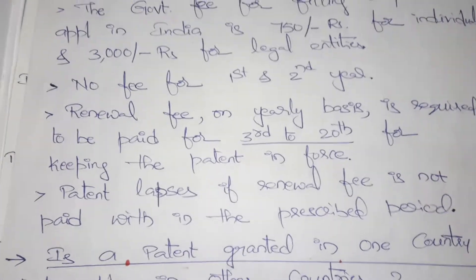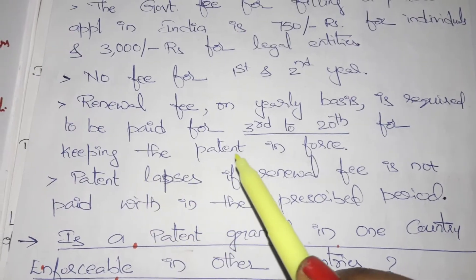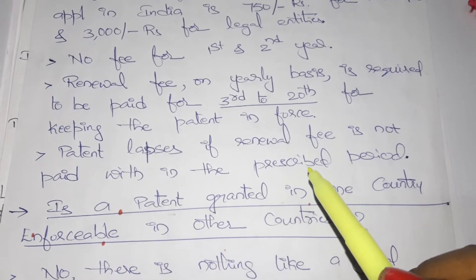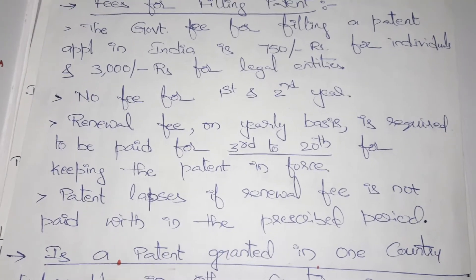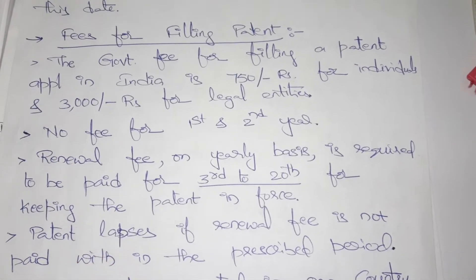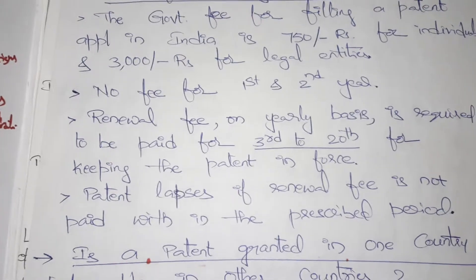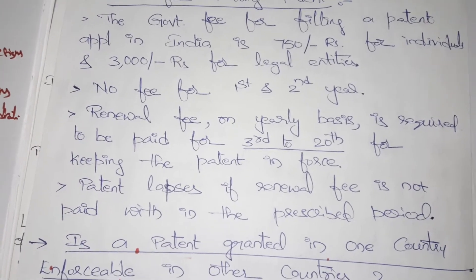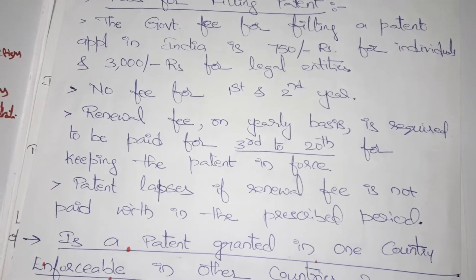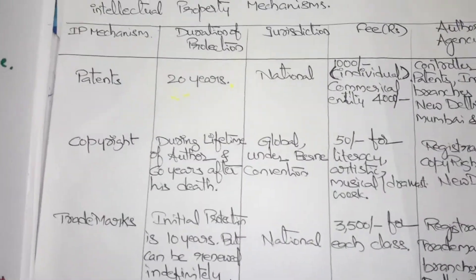A renewal fee on a yearly basis is required to be paid from the 3rd to the 20th year to keep the patent in force. The patent lapses if the renewal fee is not paid within the prescribed period. So the patent rights are valid up to 20 years, but annual renewal fees must be paid from year 3 onward; otherwise, the patent lapses.